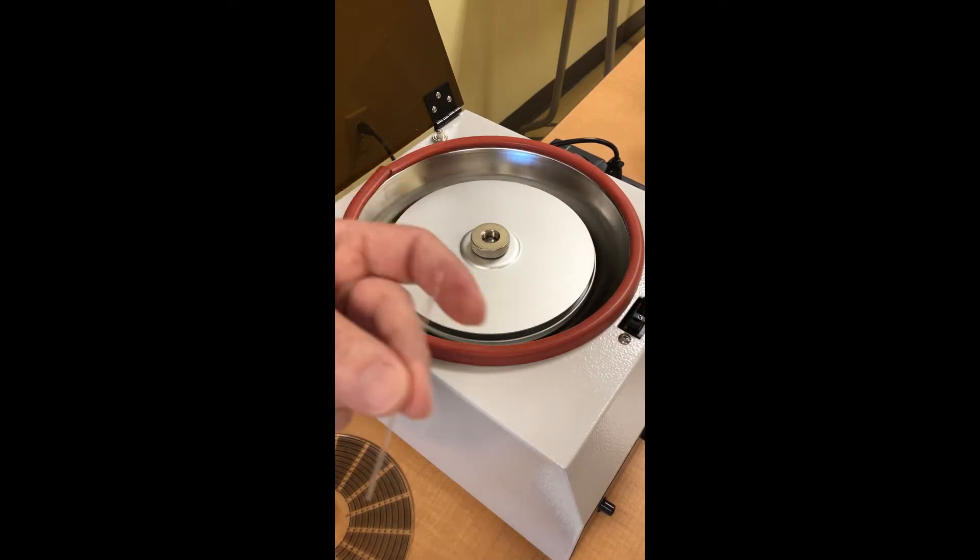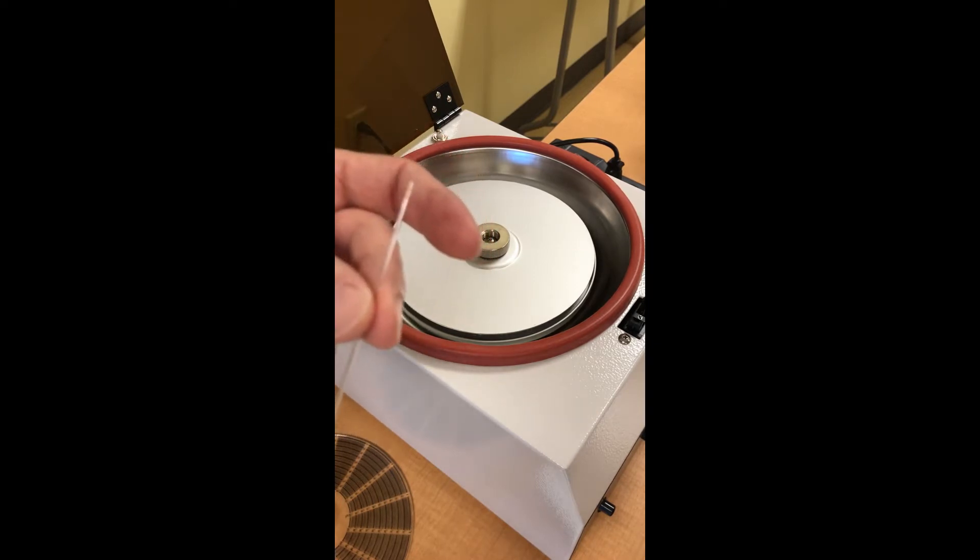All right, let's take a look at centrifuging blood to determine hematocrit. Remember that hematocrit is the percent that red blood cells make of total blood volume, and for most people that's somewhere around 45 percent.